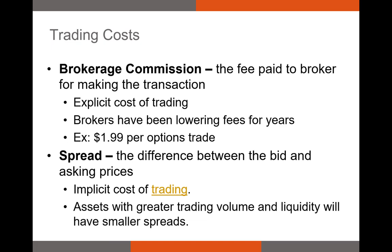Now let's talk about trading costs. There are two big trading costs you should know about: commissions and the bid-ask spread. The commission is the fee you pay to your broker so they'll process your order to buy or sell assets — it's the explicit cost of trading. Brokers have been perpetually trying to undercut one another, and as mentioned, E-Trade, TD Ameritrade, and many others stopped charging commissions for stock trades in 2019. However, they still charge fees on trades for options and other asset types.